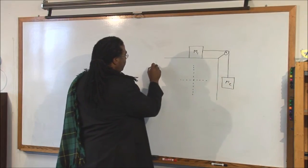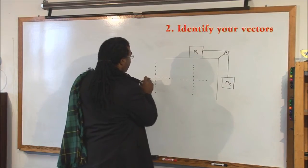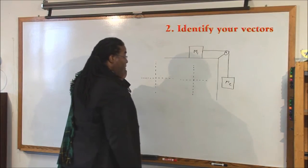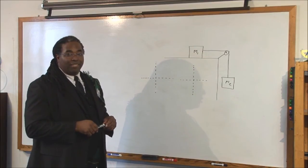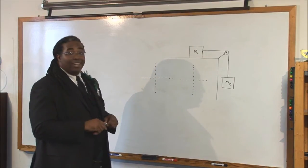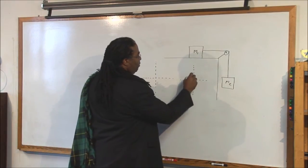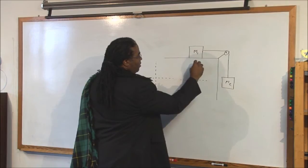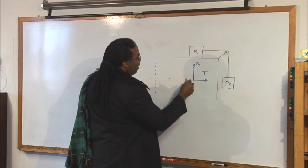Step two, identify your forces. So, how many forces do you see acting on block one? What's touching it plus gravity? If you said three, you'd be right. So, we have the normal force. You have tension. And you have gravity.